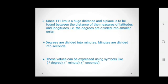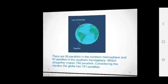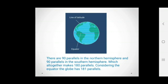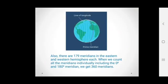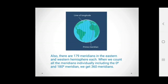These values can be expressed using symbols: degrees, minute, seconds. There are 90 parallels in the northern hemisphere and 90 parallels in the southern hemisphere, which altogether makes 180 parallels. Considering the equator, the globe has 181 parallels. Also, there are 179 meridians in the eastern and western hemisphere each. When we count all meridians individually, including the 0 degree and 180 degree meridian, we get 360 meridians.